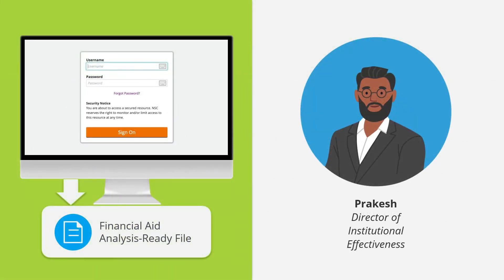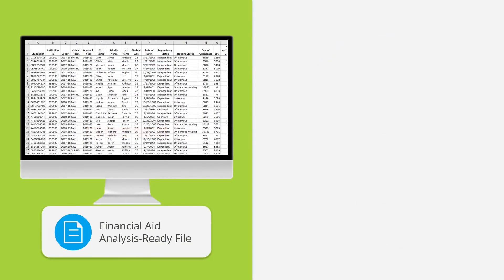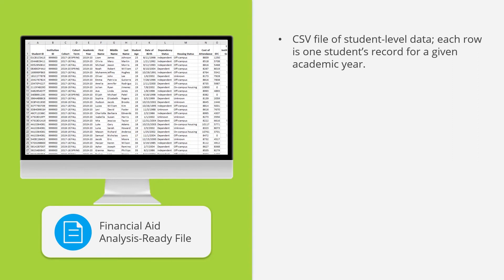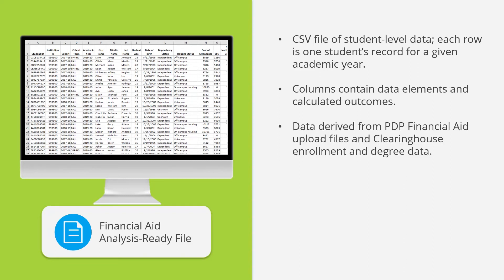Finally, Prakash explores the Financial Aid Analysis-Ready file. He learns the Financial Aid Analysis-Ready file is a CSV file of student-level data where each row is one student's record for a given academic year. Columns contain data elements and calculated outcomes. Data are derived from the PDP Financial Aid upload files and Clearinghouse Enrollment and Degree data.